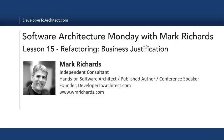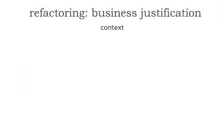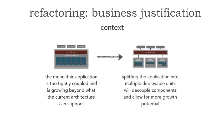In today's lesson, lesson 15, we'll take a look at refactoring architecture, but specifically forming a business justification when we are doing refactoring. Let's start with some context where we have a monolithic application that's too tightly coupled, which is giving us some technology pain. We realize as an architect it's growing way beyond what the current architecture can support, and if we split that application into multiple deployable units, we'll be able to decouple components and allow for more growth.